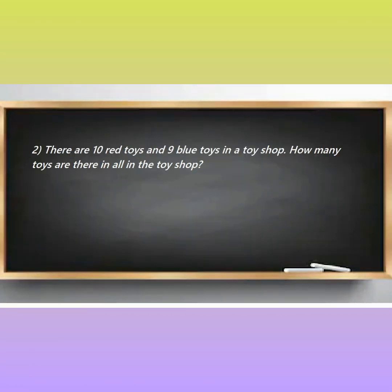Let's take one more example. There are ten red toys and nine blue toys in a toy shop. How many toys are there in all in the toy shop? So, here the information is given. Ten red toys and nine blue toys are there in the shop. And, we have to find out how many toys are there in all in that shop. So, as earlier told, whenever in all comes in the story, we have to do addition.